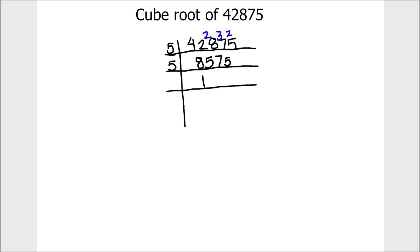5 times 1 is 5, then 3 is remainder, this becomes 35. 5 times 7 is 35. 5 times 1 is 5, this becomes 25 and 5 times 5 is 25.